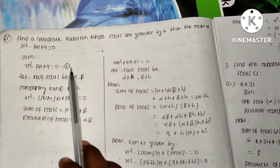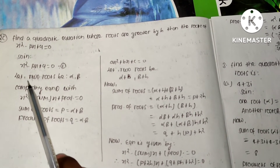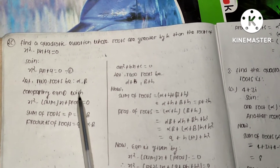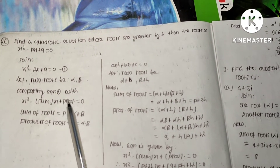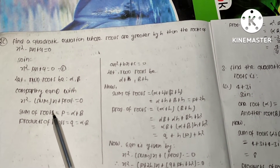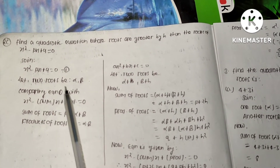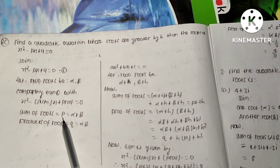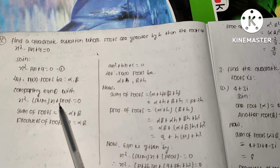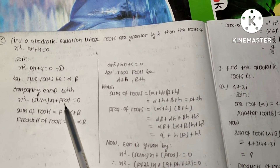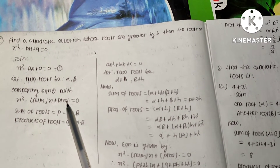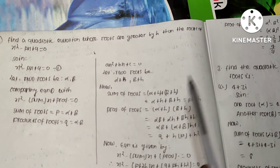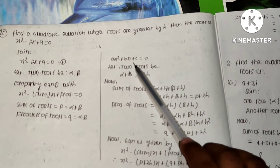Let the given equation be equation one, and let the two roots be alpha and beta. Comparing equation one with the formula x squared minus (sum)x plus (product) equals zero, the sum of the roots equals p, so alpha plus beta equals p. The product of the roots equals q, so alpha times beta equals q.